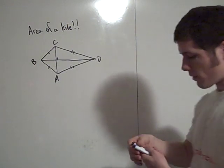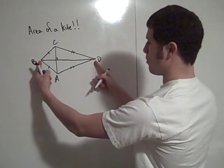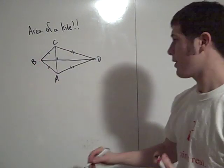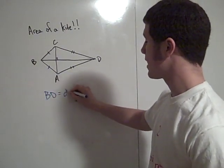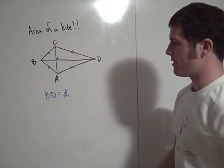Let's call the length BD equal to D1, diagonal one. So BD has length D1. And AC has length D2.